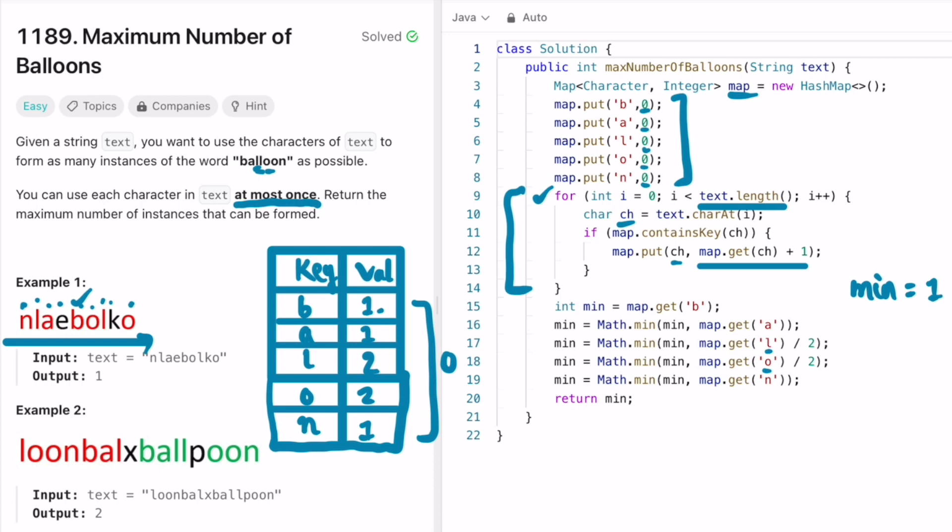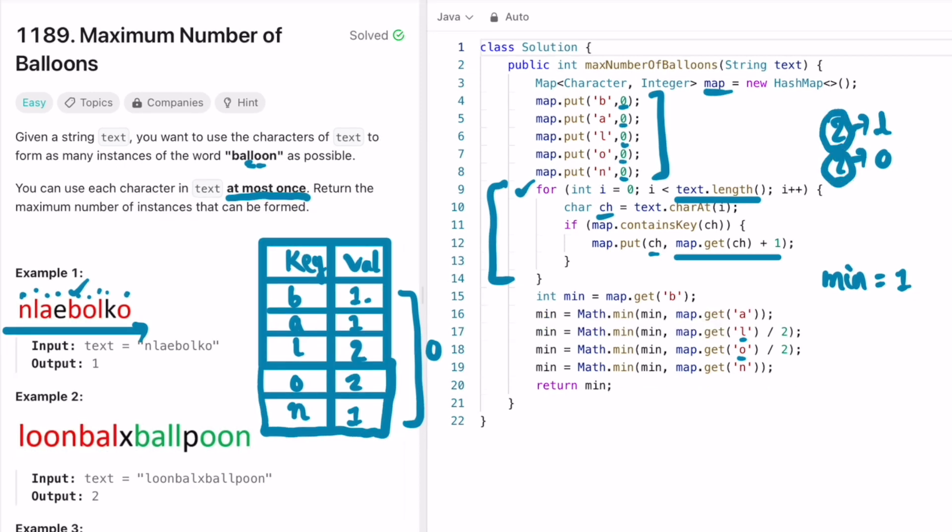Since O and L are appearing twice in the word balloon, I'm dividing that count by two so that I compare it with the minimum value. Because in each balloon you're using two L's and two O's. So if there are two L's and two O's inside the map, you are going to use both these characters to form one balloon. That is why I'm dividing L and O with twos to form one word.